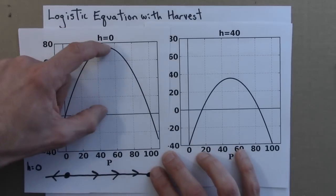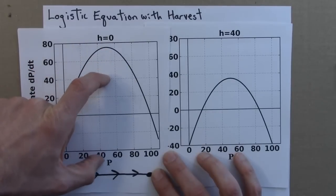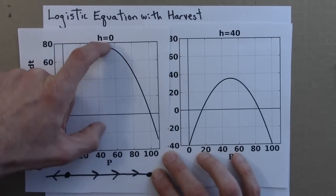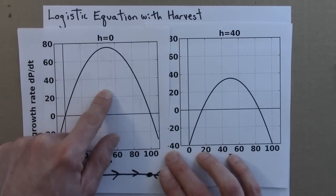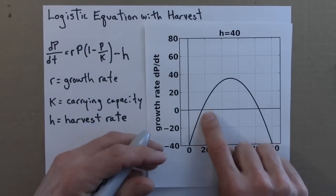Alright, so here this is the graph with h equals 0. h equals 40, I just subtract 40 from it. So if I just took this and shifted it down by 40, I would get this curve. So here's the curve, and let's see what the dynamics are now.